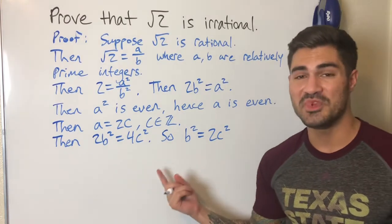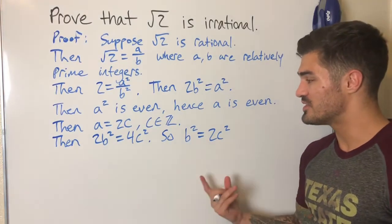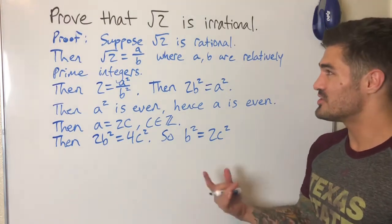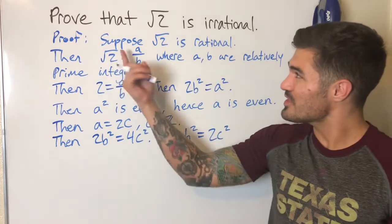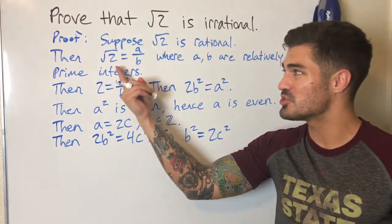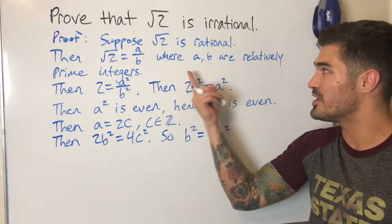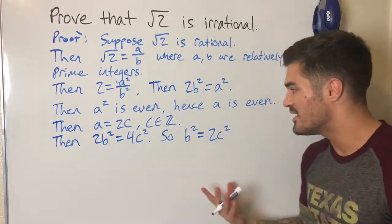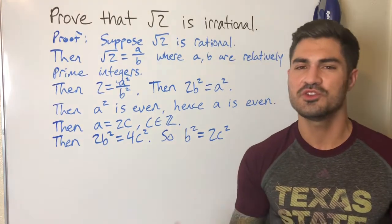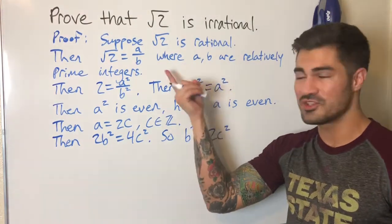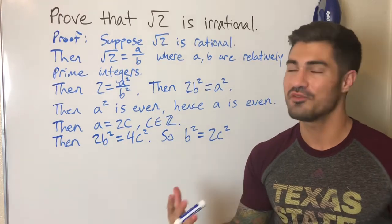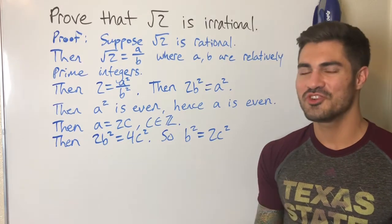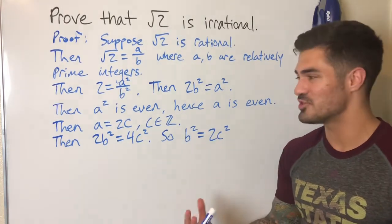This tells us that b² is also even, which means b is also even. So 2 is a factor of both a and b. This is our contradiction, because we supposed √2 is rational meaning a and b are relatively prime — they only share a common factor of 1 — yet now we've seen they have a common factor of 2. Therefore the square root of 2 is irrational.